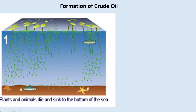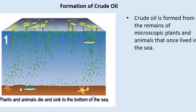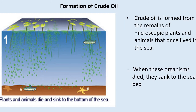The first thing that happens resulting in the formation of crude oil is that plants and animals die and they sink to the bottom of the sea. We've got lots of plankton and sea creatures that cannot swim against a current — this includes algae, bacteria, and some other small animals. They die and sink to the bottom of the sea. So crude oil is ultimately obtained from these microscopic plants and animals.